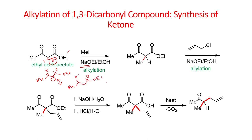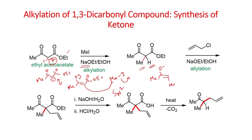This enolate can undergo an SN2 substitution reaction — you can introduce a methyl group here. Once methylation is done, you have another acidic proton; it can be deprotonated with another molecule of this base. After deprotonation, you will have this enolate, which further undergoes reaction via SN2. So, you can get this dialkylated ethyl acetoacetate.